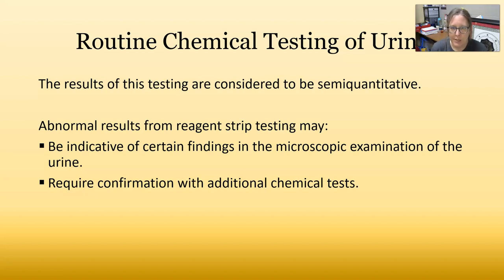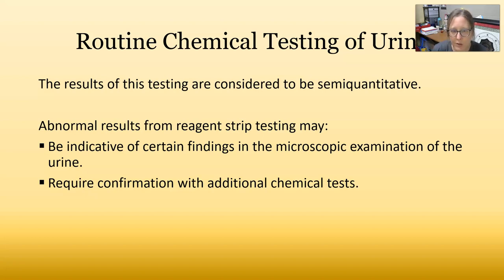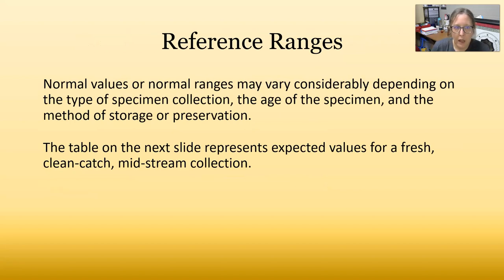The results of this testing are considered semi-quantitative — we get number ranges or 1+, 2+, 3+, giving somewhat of a quantity but not an exact number. Abnormal results from reagent strip testing may be indicative of certain findings in the microscopic examination of the urine, or they may require confirmation with additional chemistry tests, including serum or plasma chemistry tests. Reference ranges can vary considerably depending on the type of specimen collection, age of the specimen, method of storage and preservation, and the brand of strips or machine used.